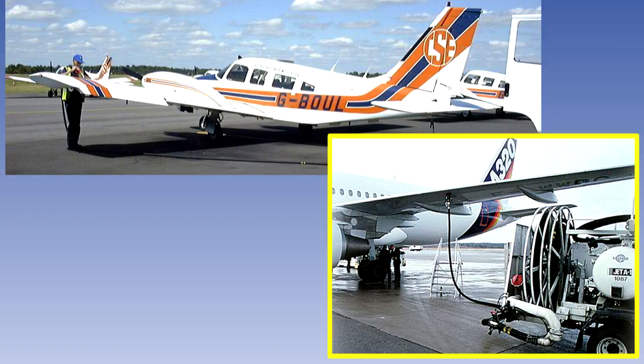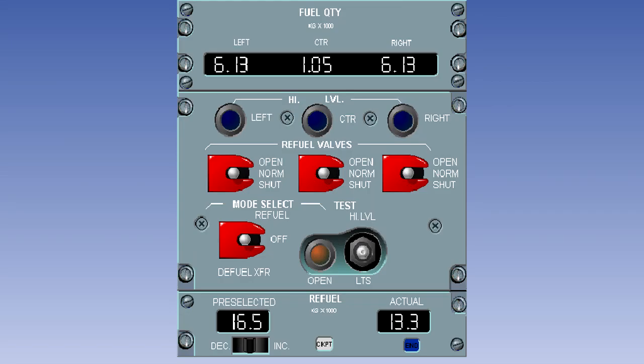Practically all modern jet-engined aircraft are pressure refuelled from hydrants or delivery vehicles through underwing refuel and defuel coupling points. The operation is controlled from a single external refuel control panel. An example of an external refuel control panel for a jet-engined aircraft is shown here.